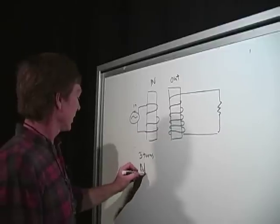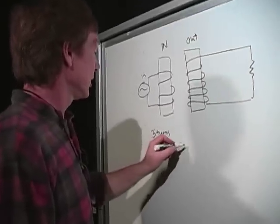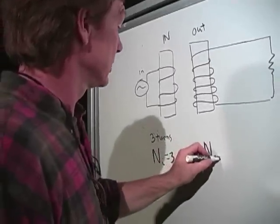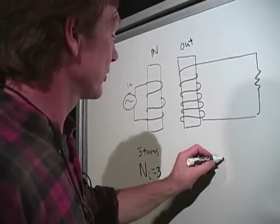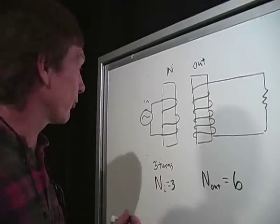This is N_i for input number of turns. That's three. And N_out is the output number of turns, and that's six. All right. I've got a voltage in, and I've got a voltage out.